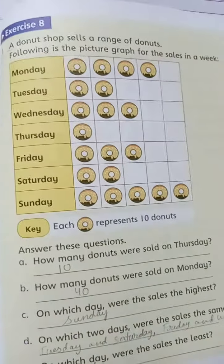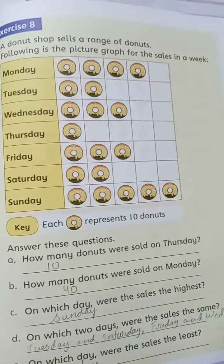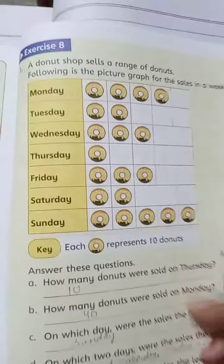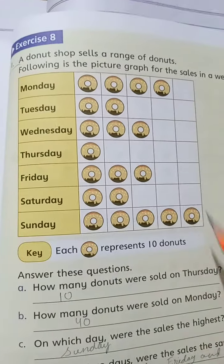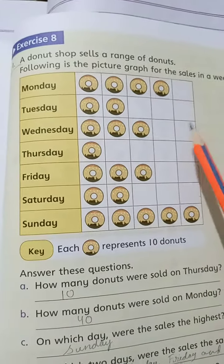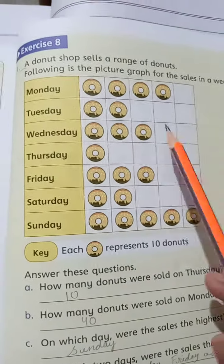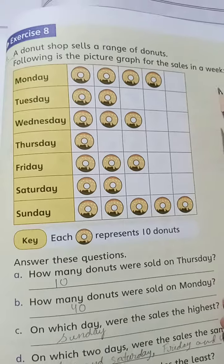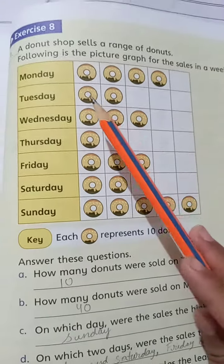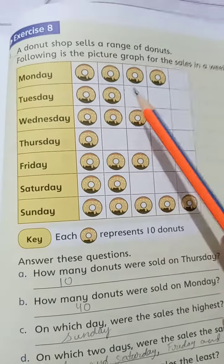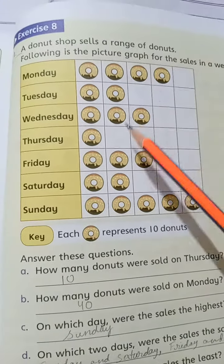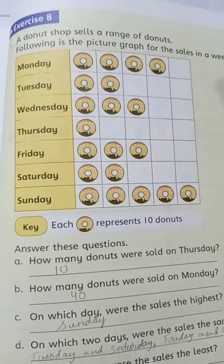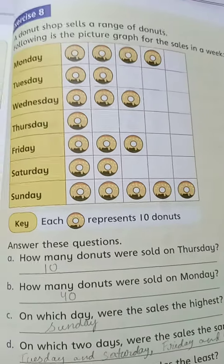Assalamu alaikum, class. Today we will do page number 209. A donut shop sells a range of donuts. Following the picture graph, it says in a week how many of the total range of donuts are sold each day?